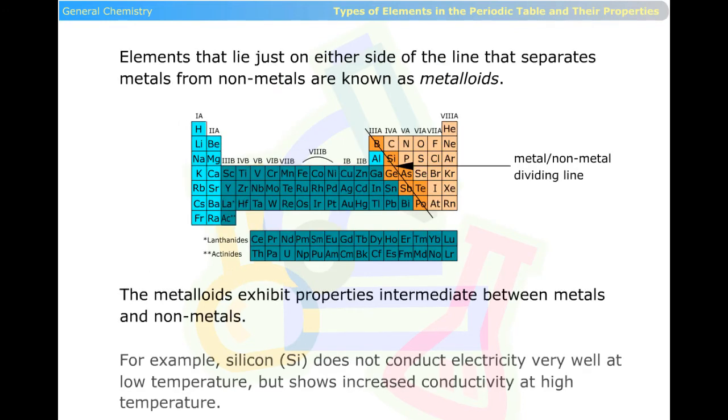Elements that lie just on either side of the line that separates metals from non-metals are known as metalloids. The metalloids exhibit properties intermediate between metals and non-metals.